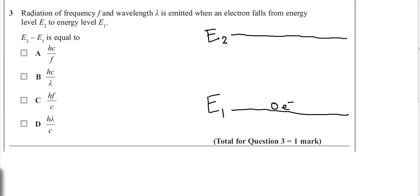The question says: radiation of frequency F and wavelength lambda is emitted when an electron falls from energy level E2 to energy level E1. So at first, let us know what is energy level E2 and energy level E1. Here is the relationship given: E2 minus E1.